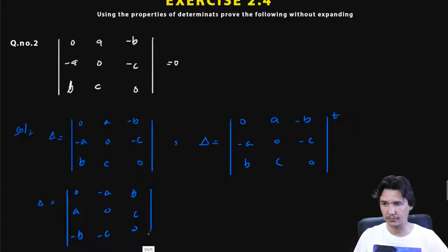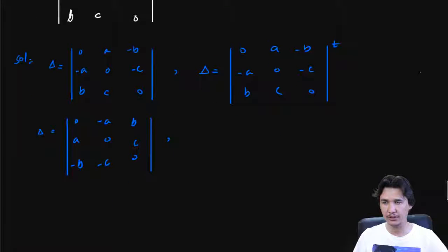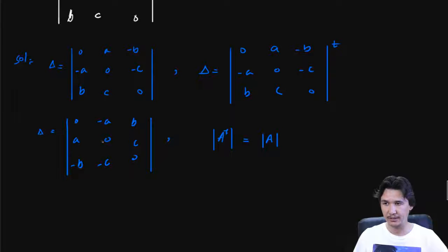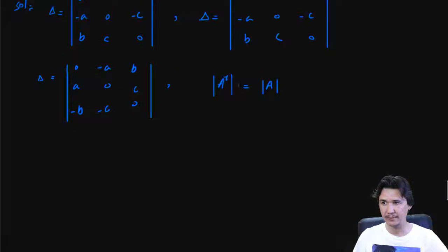There is a property of determinants: when you take the transpose of any determinant, the value of the determinant remains the same as the original matrix. Therefore, the transpose of delta is also equal to delta.